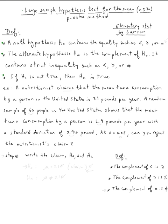Let's do this example. A nutritionist claims that the mean tuna consumption by a person in the United States is 3.1 pounds per year. A random sample of 60 people in the United States shows that the mean tuna consumption by a person is 2.9 pounds per year with a standard deviation of 0.94 pounds. At alpha equal 0.01, can you reject the nutritionist's claim?